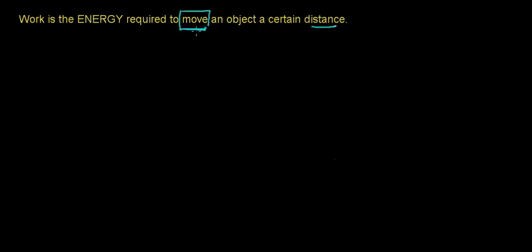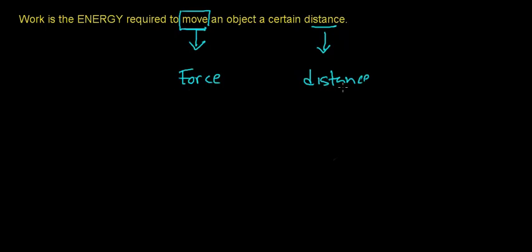In order to move an object a distance, you have to apply a force to that object, assuming that this object is not already traveling at constant velocity. This force has to act on the object over some distance, and it is going to cause this object to speed up, slow down, or change direction.